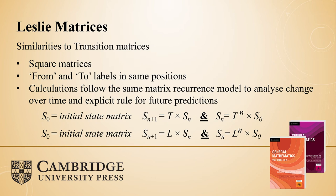Some similarities we see with Leslie matrices compared to general transition matrices: we're still working with square matrices — two by two, three by three, four by four. The 'from' and 'to' labels that we traditionally see presented in the exam — along the top of the matrix and along the right-hand side — are still in the same positions and still mean the same thing. So the way you explain it to students with transition matrices, you can let them know it'll be presented the same way for Leslie matrices.